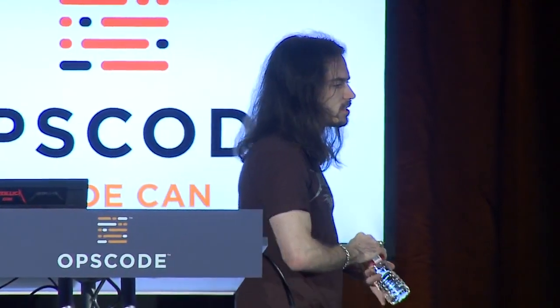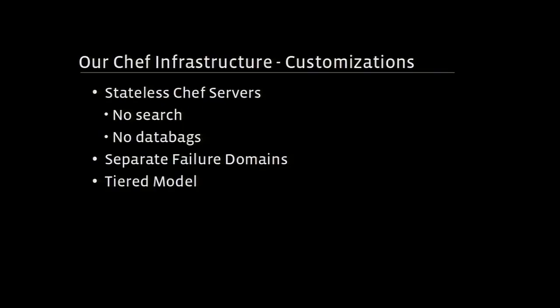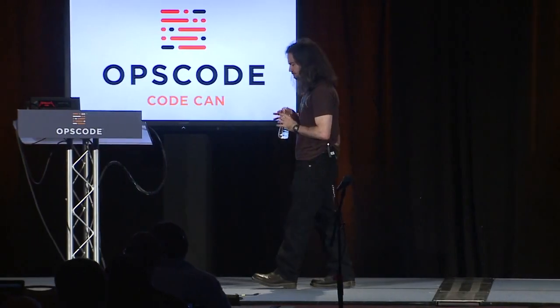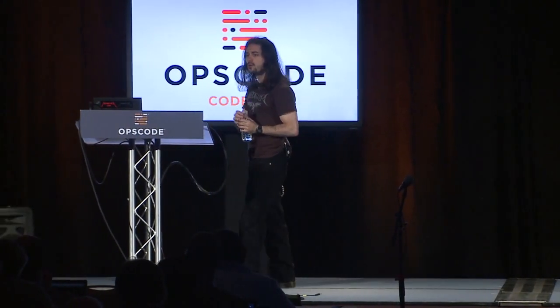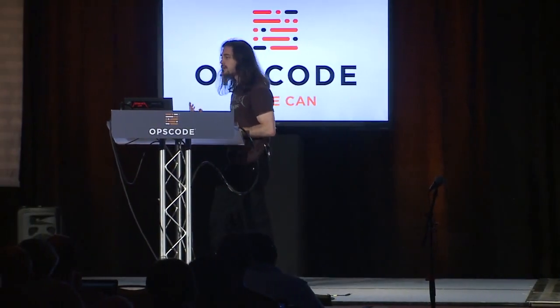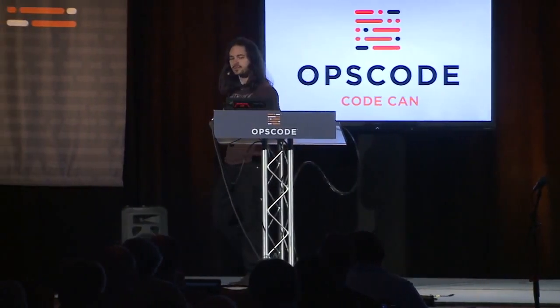Before I show you a picture of our environment, there are a couple of things you need to understand. We wanted our Chef servers to be stateless — treated like commodity hardware, re-imageable at a moment's notice. That meant we couldn't use search, partly because we use whitelist node attributes, so there's no data on the server to search. It would be kind of pointless.